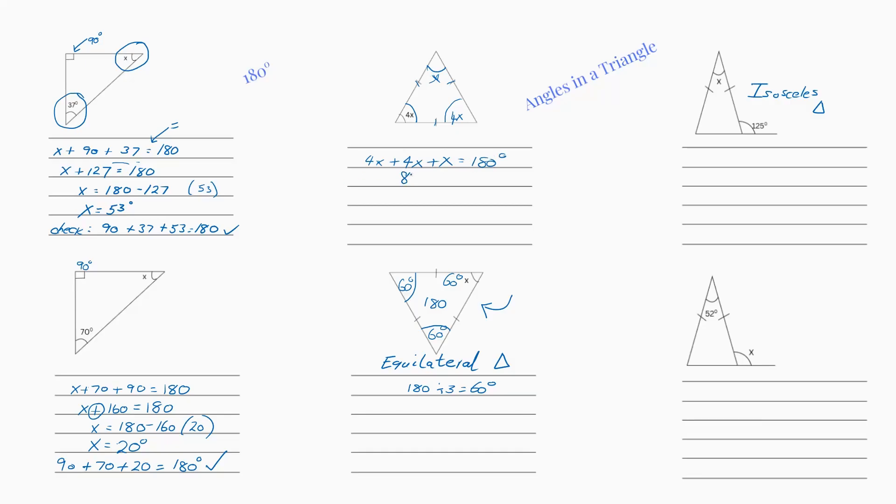So now we have 8x plus x. I mean I'm fully right at this, you could have just done 9x like that. 180 divided by 9, x equals 20 degrees.